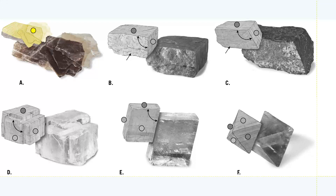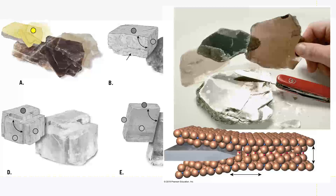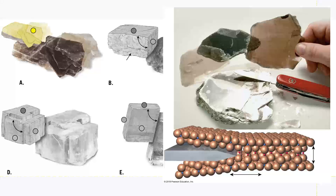First, we have one cleavage plane. The minerals biotite and muscovite have this kind of cleavage. Minerals with one plane of cleavage will peel because those planes are parallel to one another. On the top, you can see some sheets of biotite. That chunk that the pocket knife is resting on is the bigger mineral, and the knife can easily slide between the more strongly bonded layers, cutting those weaker bonds and flaking off thinner and thinner sheets.